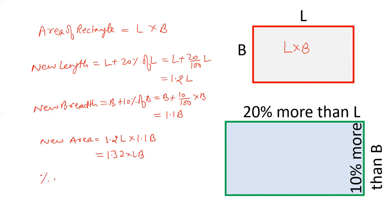Percentage increase in area equals new area minus old area upon old area into 100. That is 1.32 LB minus LB equals 0.32 LB upon LB into 100. This is cancelled out. When you multiply this, you get 32 percent.